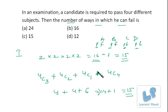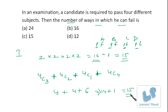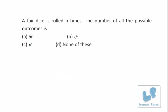So the cases are: fail in all four, fail in three, fail in two, or fail in one subject. The answer is 15 in both methods. You can use whichever method you are comfortable with. Now let's try the next question: a fair dice is rolled n times — what is the number of all possible outcomes?